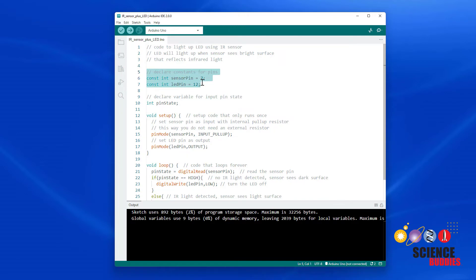First we declare variables for the pins we are going to be using. We declare those as constants because they will never change throughout the program. We declare another variable for the pin state of the input pin we'll be using with the sensor. That can be either high or low so it can change.